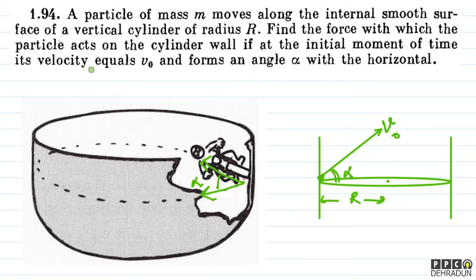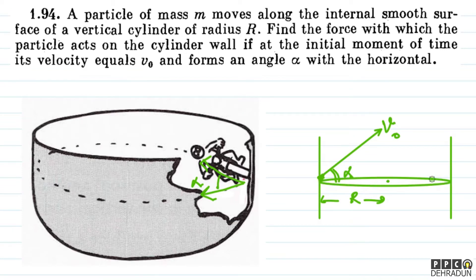It forms an angle alpha with the horizontal. तो आइए इसको समझते हैं कि इसका मतलब क्या हुआ। इसका मतलब यह हुआ कि वो अभी भी wall से चिपककर ही चल रहा है लेकिन वो अपने horizontal plane को maintain नहीं कर रहा है — वो अपनी vertical height को change करने वाला है।